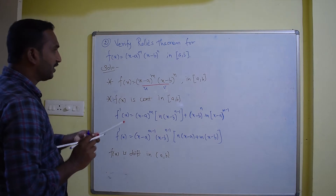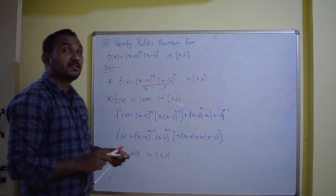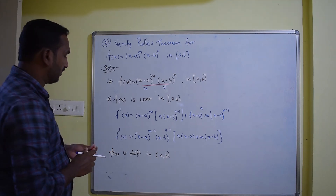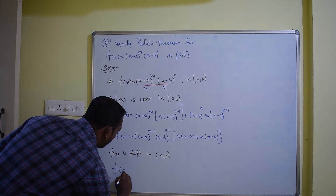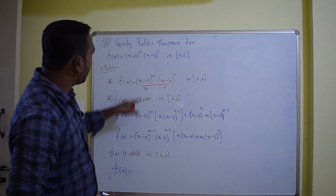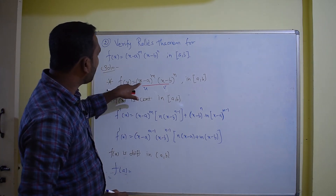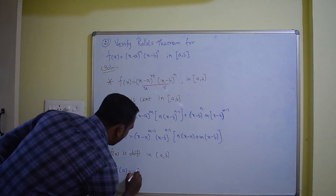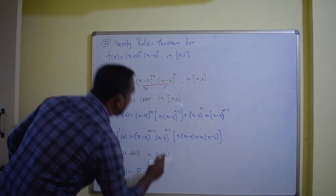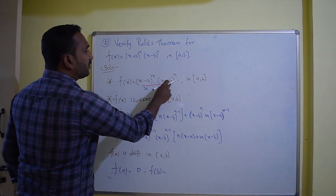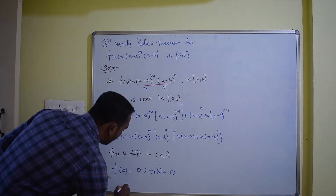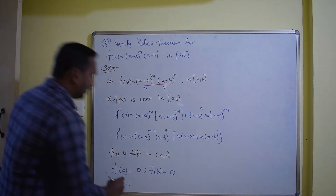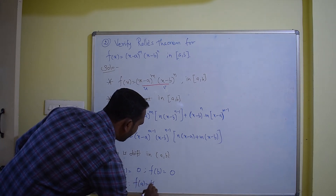The important third condition is to verify whether the values at the starting and ending points are the same. f(a): substituting x equals a gives a minus a equals 0, and 0 into anything gives 0. Similarly, f(b): b minus b equals 0, giving 0 again. So f(a) equals f(b).